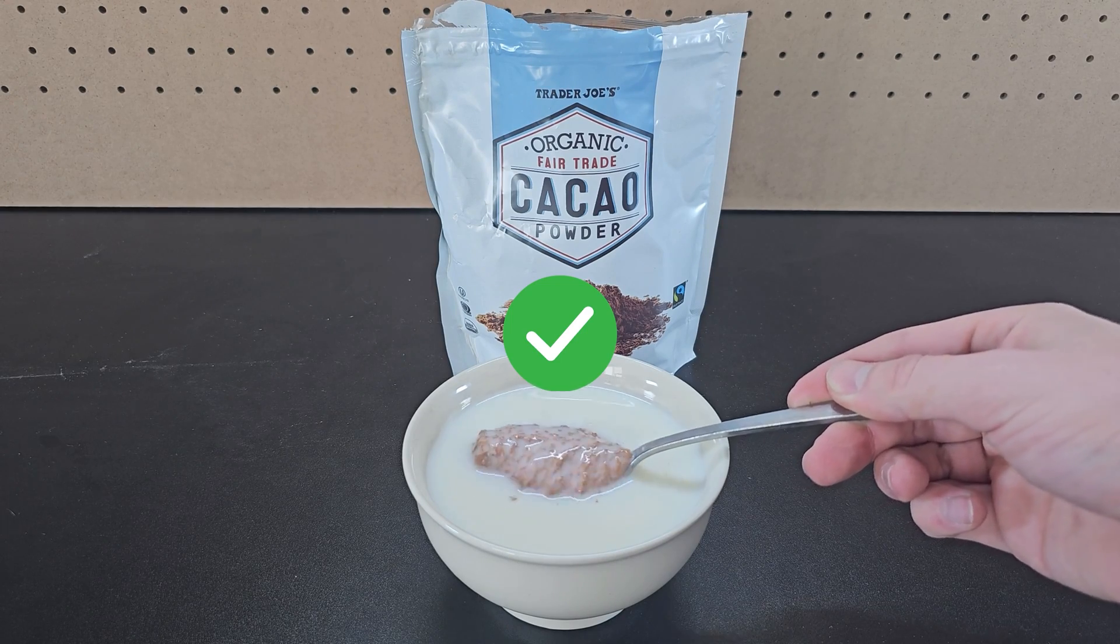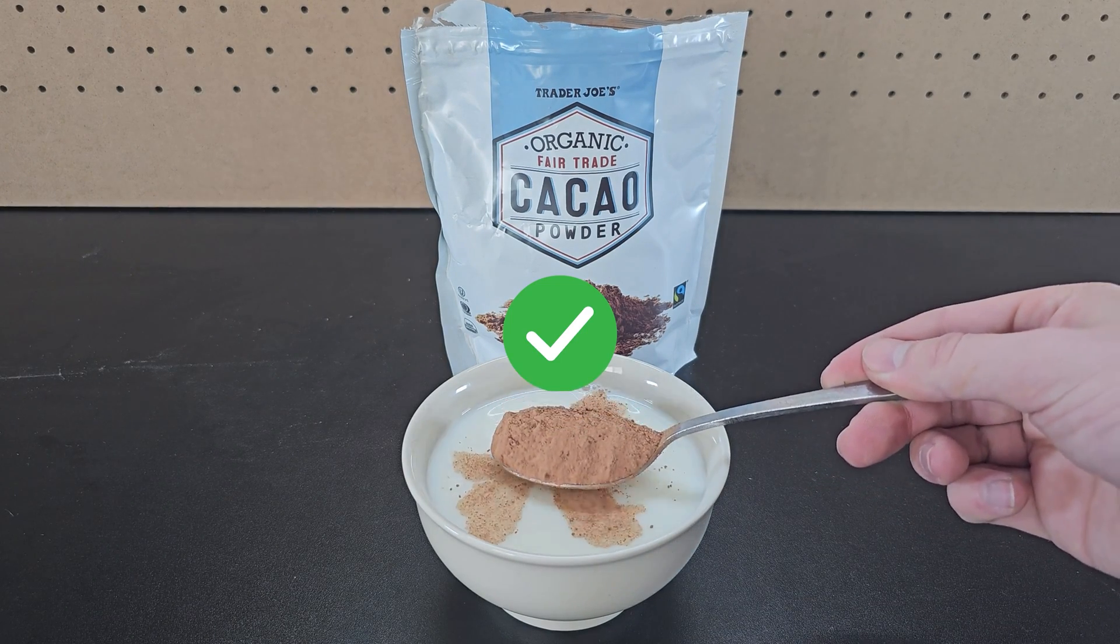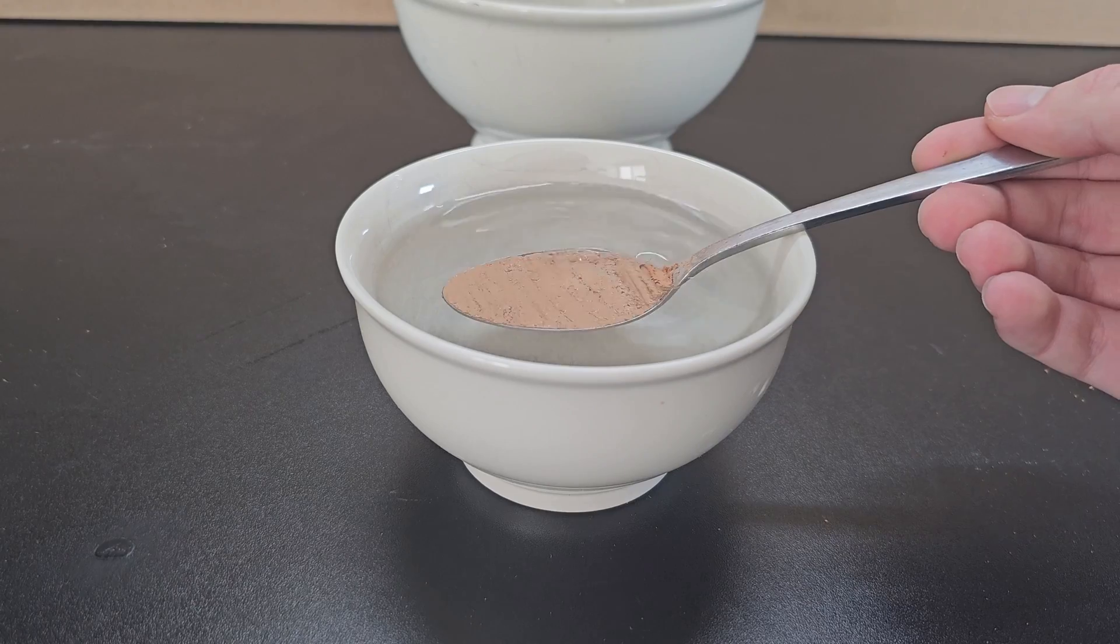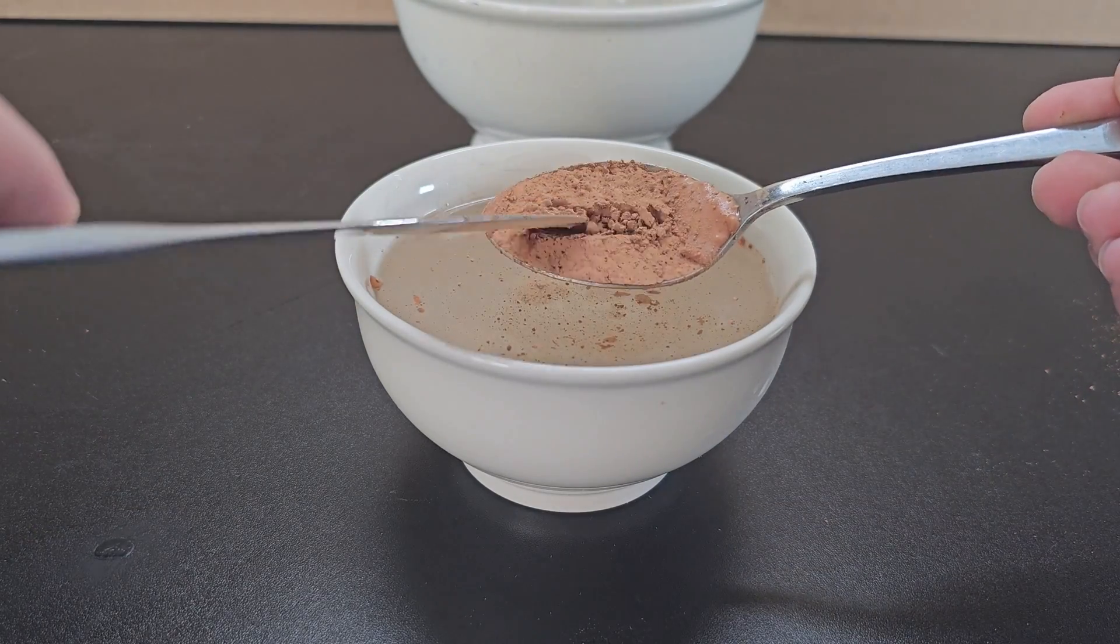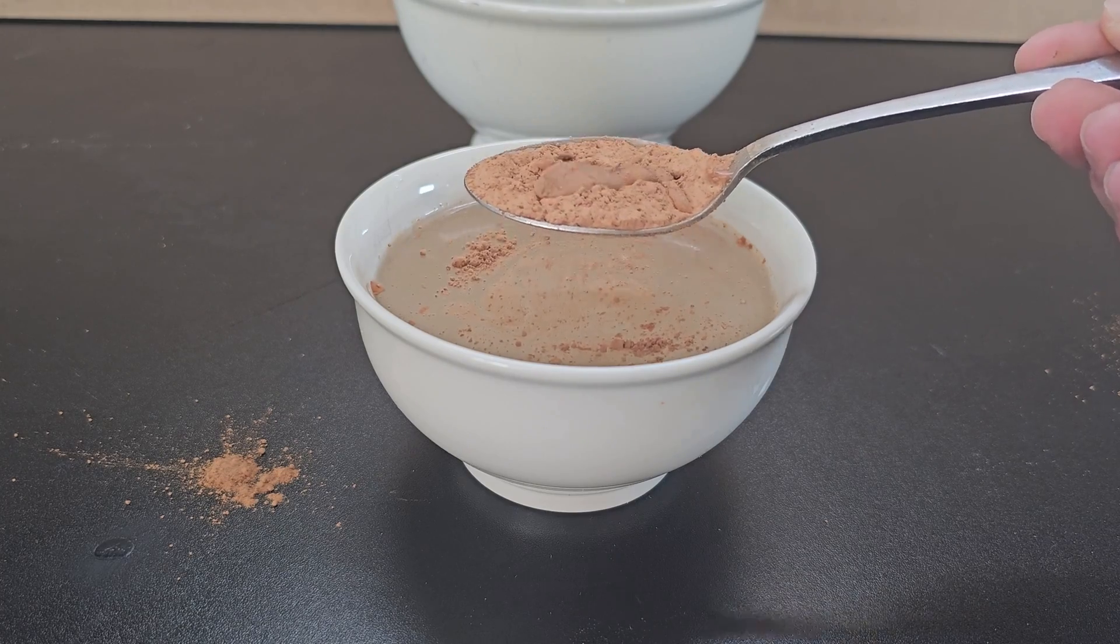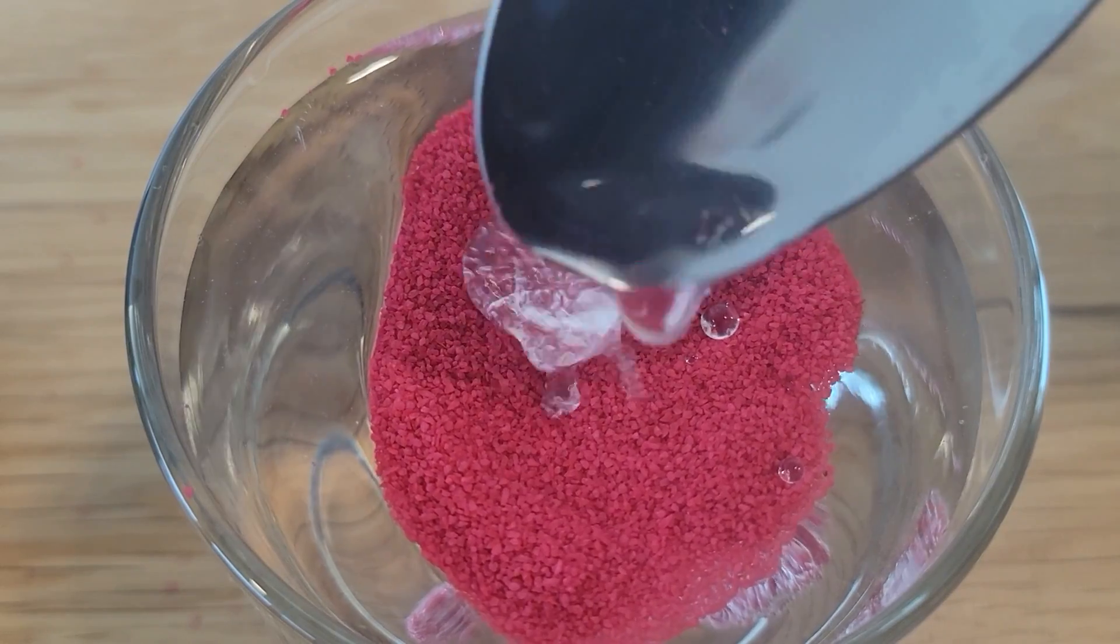The cacao powder is mostly hydrophobic, meaning only a thin layer of cacao powder actually gets wet. If I flatten it with a spoon and place it in water instead, the same thing happens. If I make a crater in the spoon and do it again, you can see the water bead and roll off just like with hydrophobic sand.